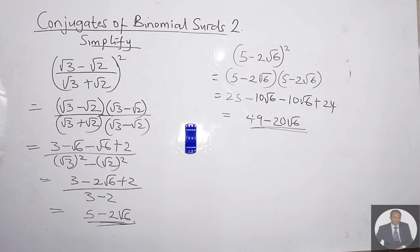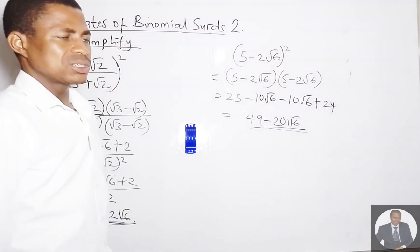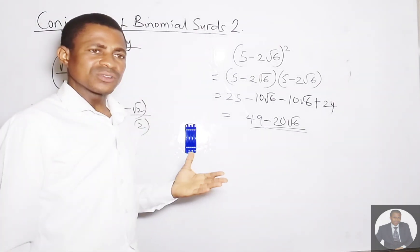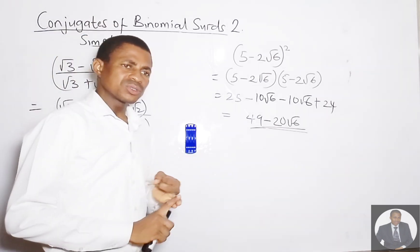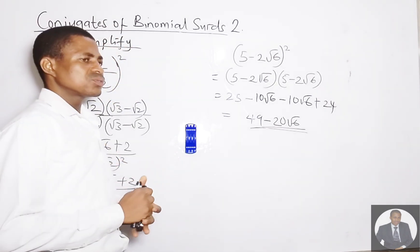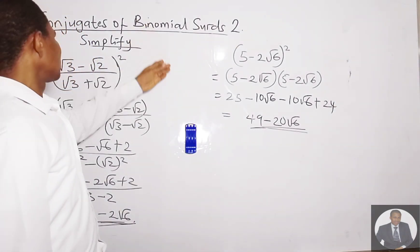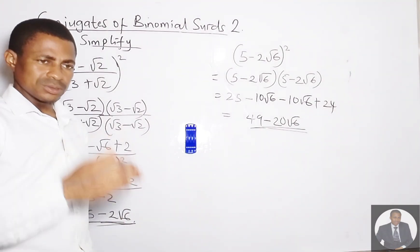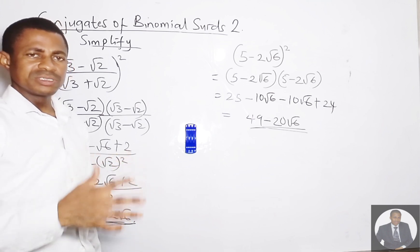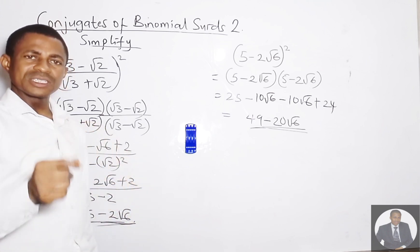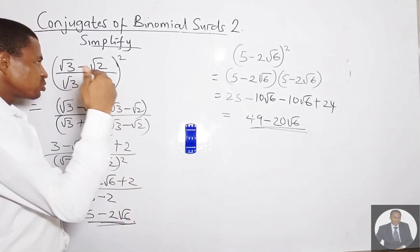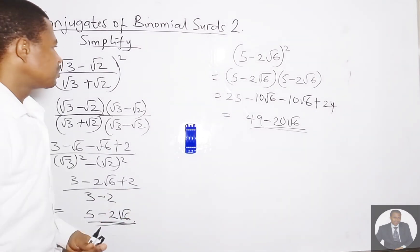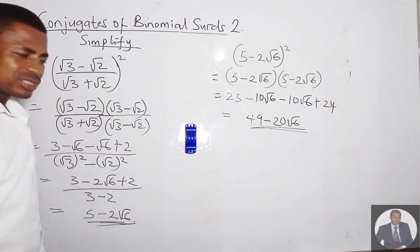With all of these questions, I believe we have achieved mastery and full understanding of what we mean by surds. This will be the end of our lessons on surds — we've covered introduction to surds, addition, subtraction, multiplication, division, and finally binomial surds and conjugate surds. In our next class, we'll be going into logarithms. Please don't forget to share, subscribe, and like, so you can be notified each time we post tutorials. Thank you.